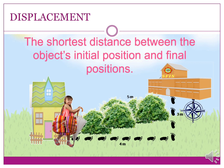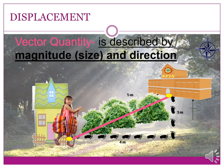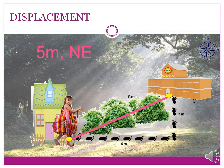Let us now talk about displacement. Displacement is the shortest distance between the object's initial position and final position. It is the straight distance from initial position to final position, and it gives an idea of how far a body is from its starting point and in which direction. Unlike distance, displacement is a vector quantity — described by magnitude or size and direction. For example, 5 meters northeast: 5 meters is the magnitude, and northeast is the direction.